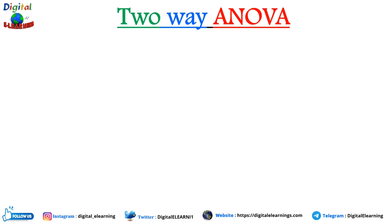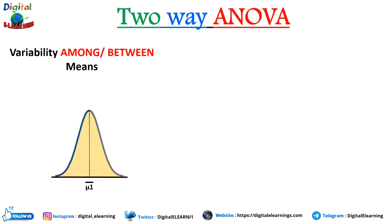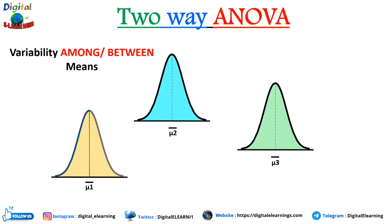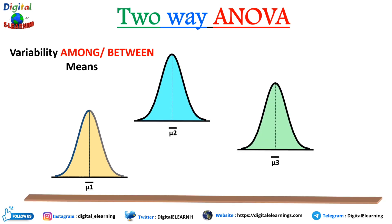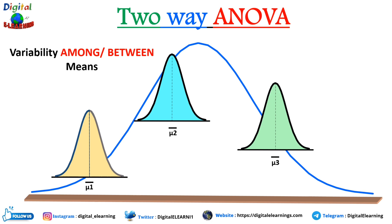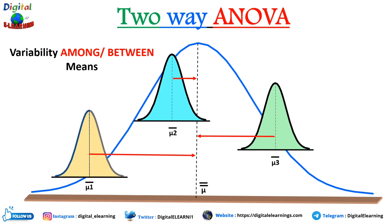Now let us understand variability among or between. We take three sample means mu1, mu2 and mu3. If we construct a normal distribution that passes through all these sample means, variability between is the distance of each mean from the overall mean. That is what we mean by variability among or between — the distance from the overall mean.